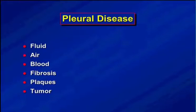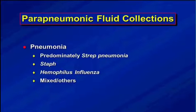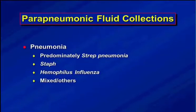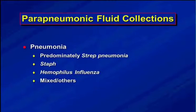In the pleura you can have fluid, air, blood, fibrosis, plaques, tumor — many different things. We're going to focus on peri-pneumonic fluid collections. By pneumonia, we usually mean streptococcal pneumonia, the most common type we see in kids. The incidence of strep pneumonia causing empyemas and abscesses is increasing, possibly due to serotype conversion or resistance from the pneumococcal vaccine, and it's becoming more common in both the UK and US. Staph is always taught as the cause of abscesses and empyemas, but it's actually much less common.